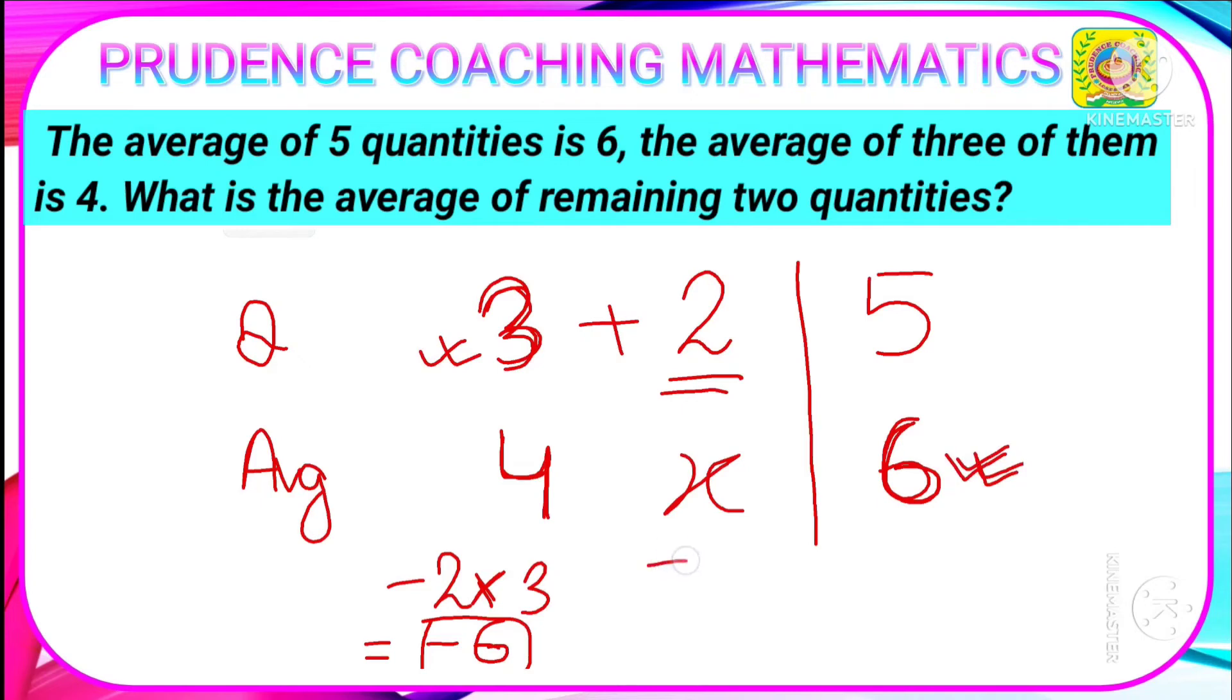So this minus 6 you need to write here plus 6 in total, so that minus 6 and plus 6 will give you 0. But this plus 6 will be distributed among this 2 items, so in average you will get 6 by 2, that is plus 3. So you need to add plus 3 to this average so that you can get the average of this 2 quantities, that is X.